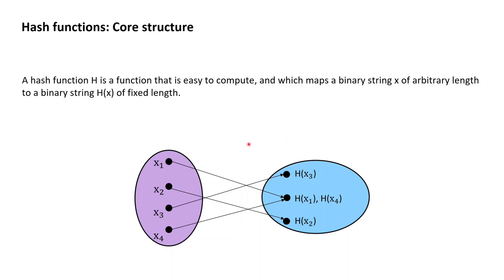In the example, the hash function h maps the element x1 to the hash value h of x1, and maps x2 to the hash value h of x2. Additionally, a hash function is a function that is easy to compute, whose input domain is binary strings of arbitrary length, and whose image domain of hash values is binary strings of a fixed length.